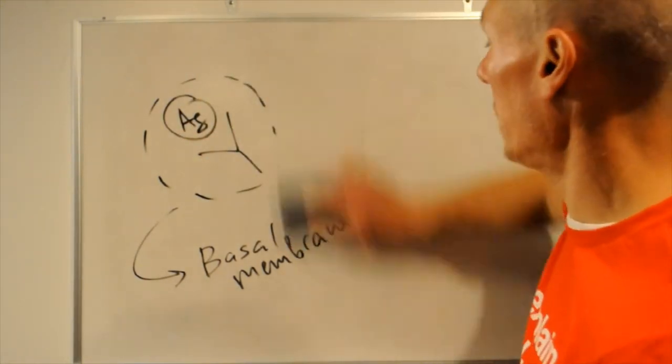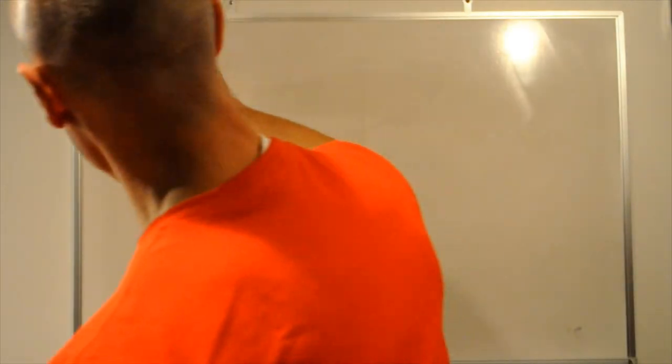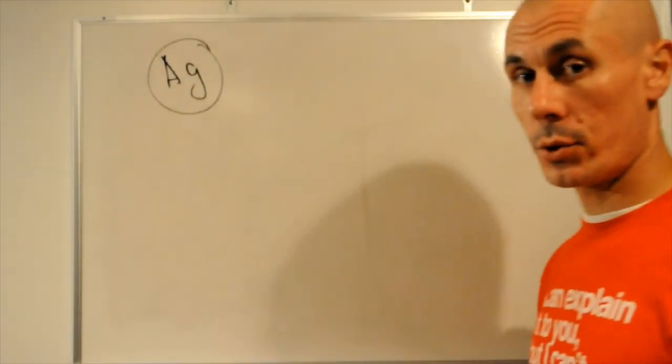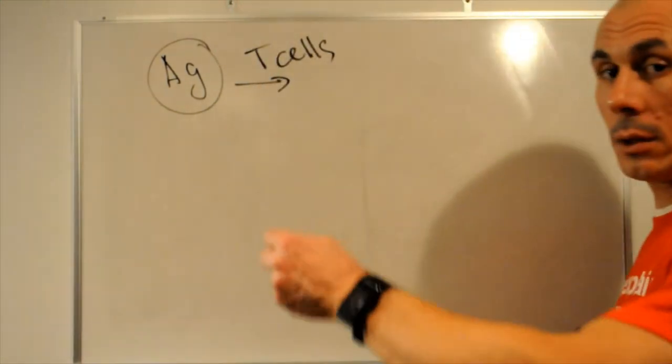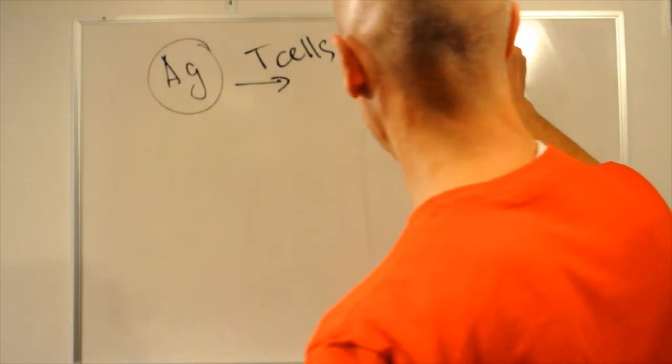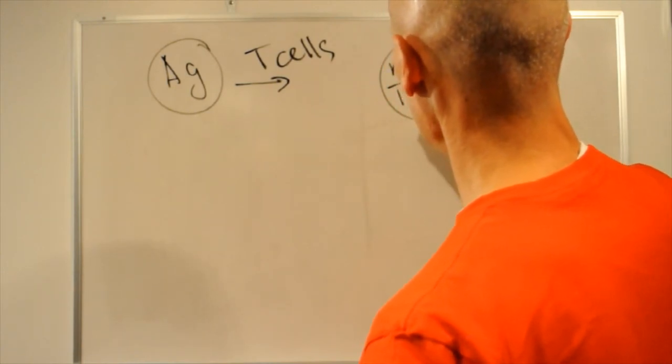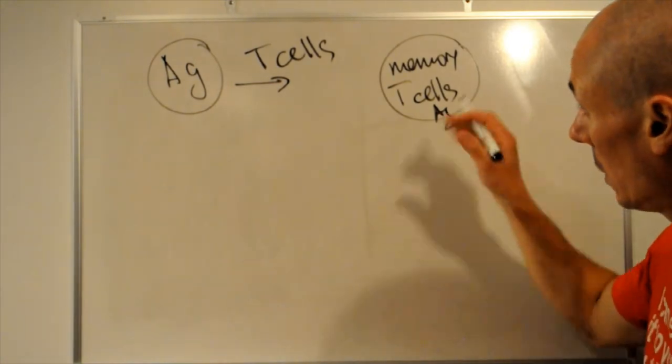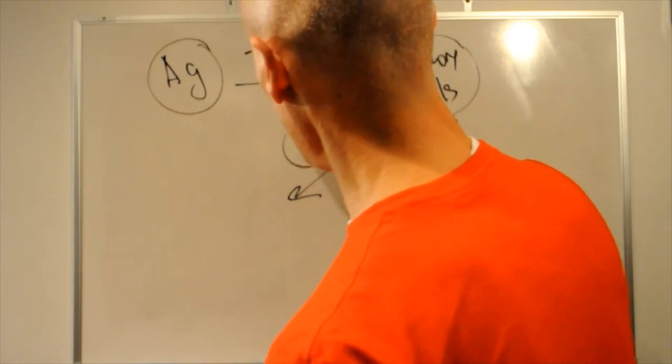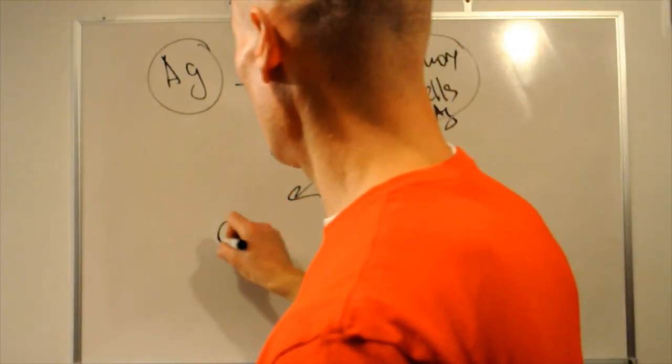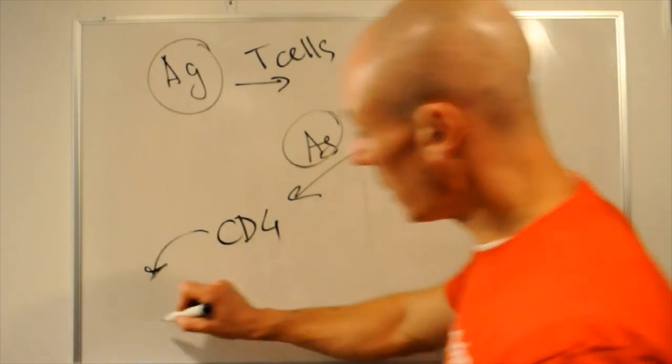Now, type four hypersensitivity is delayed because it's mediated by T cells. So, allergen is recognized by T cells. And that leads to the formation of the pool of memory T cells that remember that allergen. So, memory T cells, when there is a second exposure to the same allergen, differentiate into CD4 cells that activate macrophages.